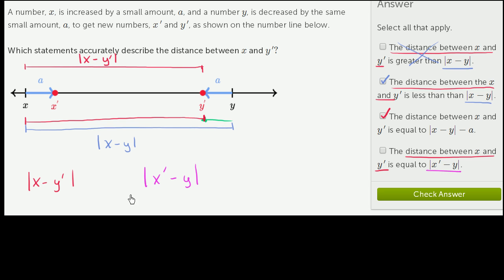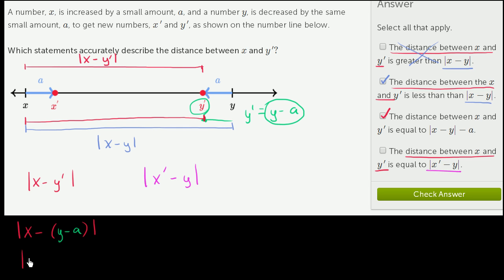One way to approach this: let's rewrite y prime and x prime in terms of x, y, and a. Y prime is equal to y minus a. So substituting y prime, the expression becomes the absolute value of x minus (y minus a), which equals the absolute value of x minus y plus a.